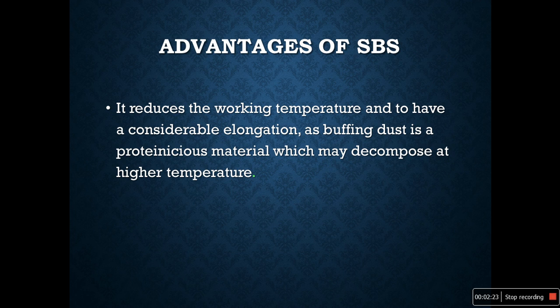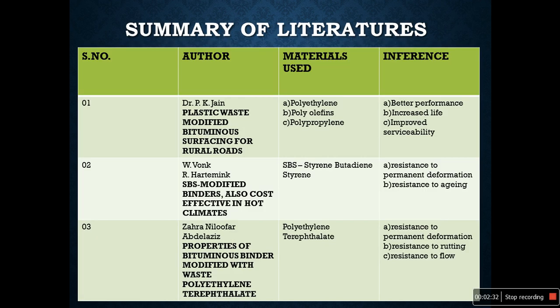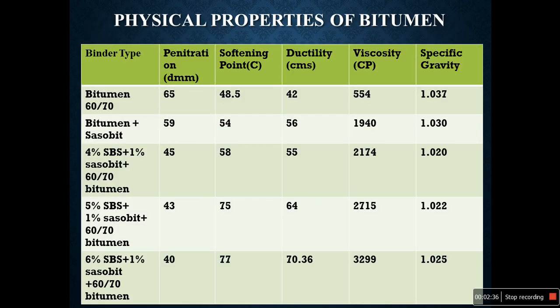The observations from the literature review are as mentioned. The advantages of SBS are that it reduces the working temperature and provides considerable elongation. The summary of the literature reviews and the physical properties of bitumen have been mentioned with binder types including 60/70 bitumen, bitumen plus Sasobit at 4%, SBS plus 1% Sasobit plus 60/70 bitumen, and others, along with their penetration values, softening points, ductility in centimeters, viscosity, and specific gravity.